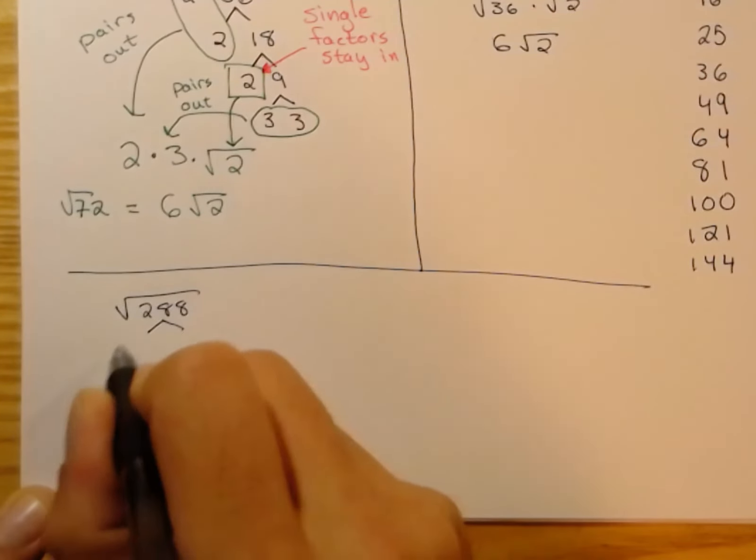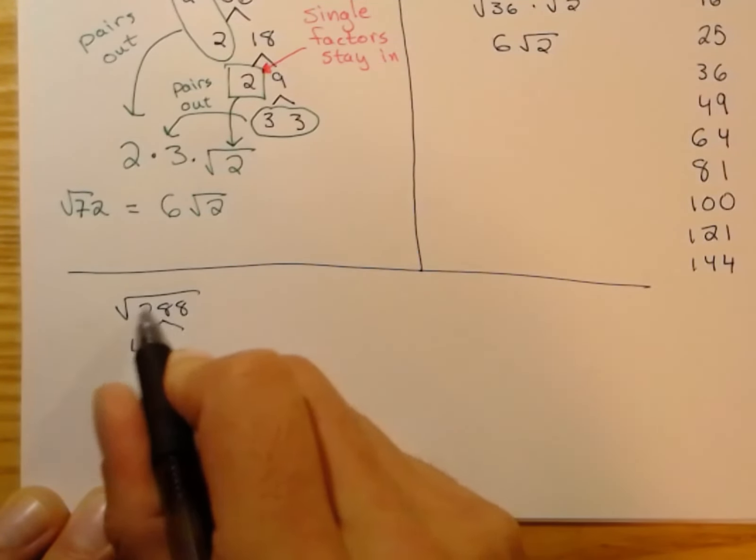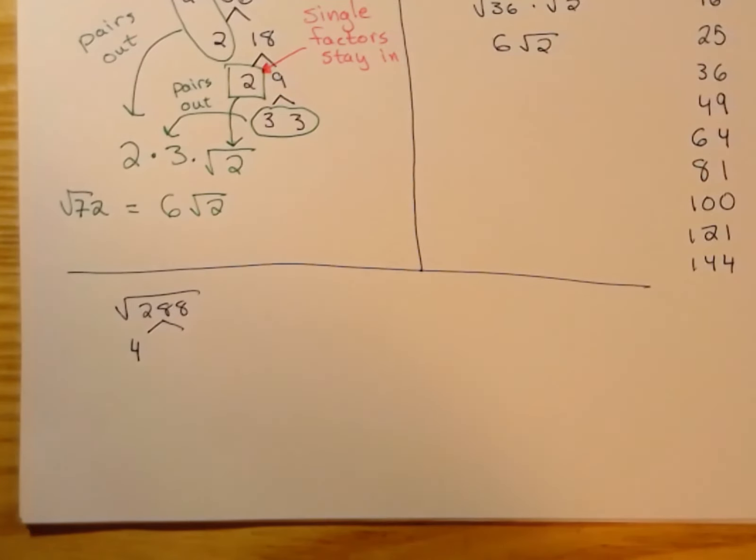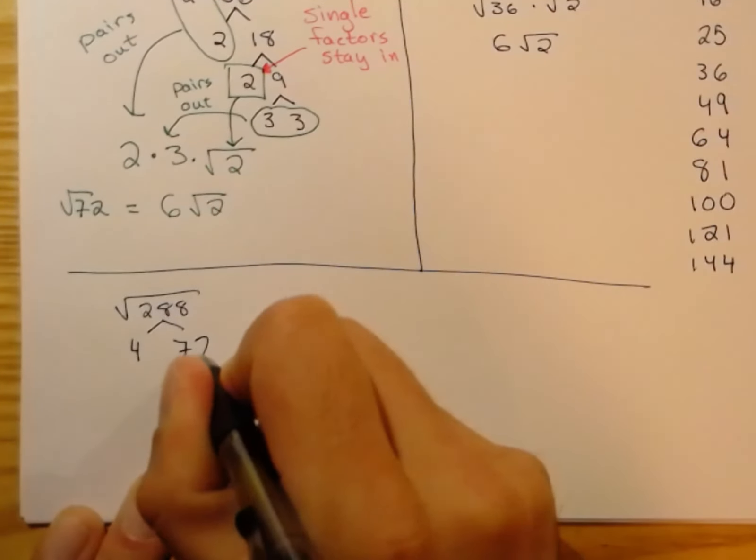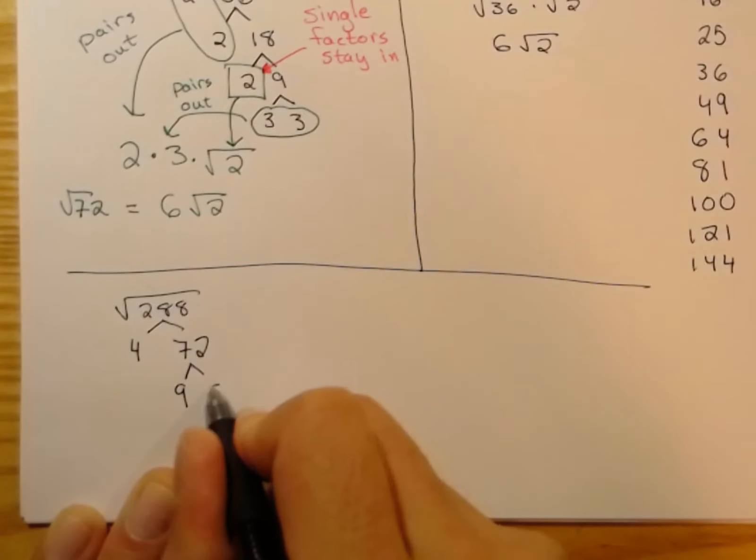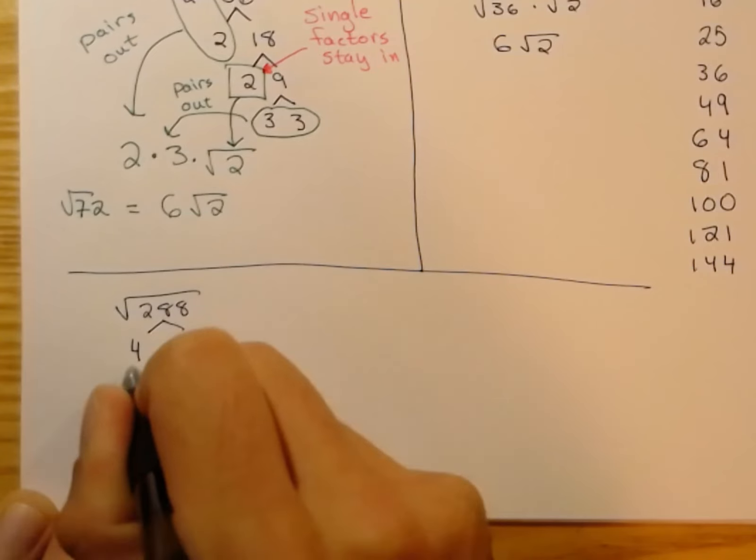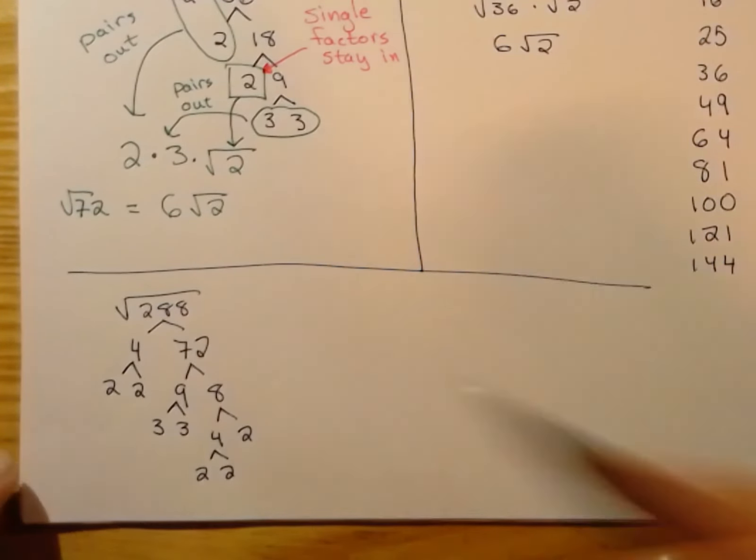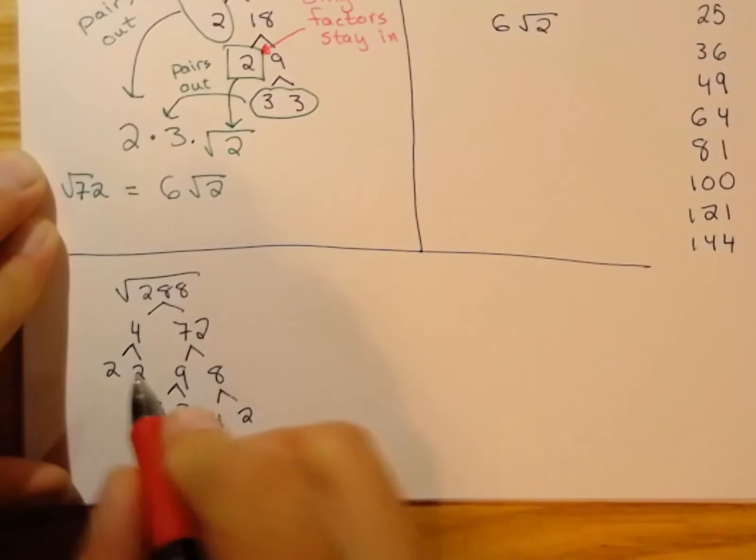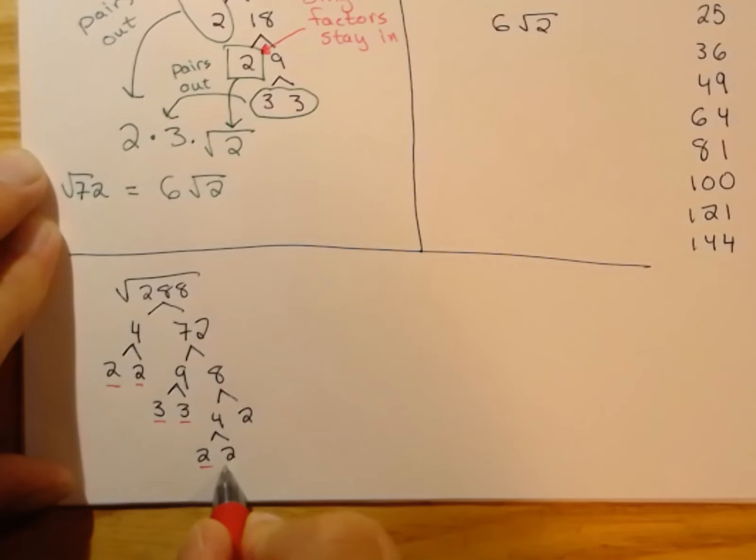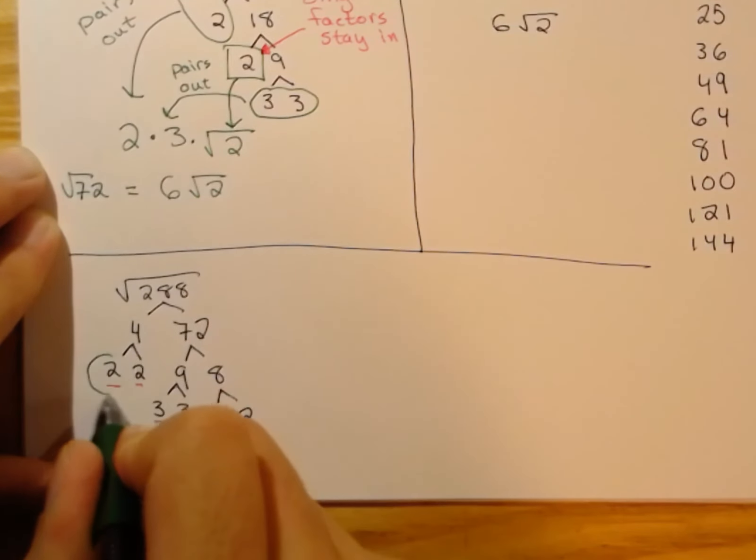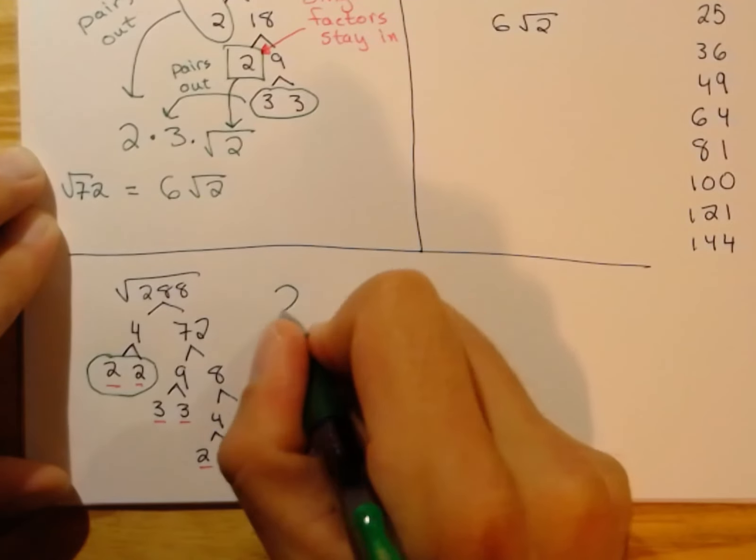First I'll do the factor tree method. 288 factors into 4, and I believe that would be 72. 72 is 9 times 8. 8 is 4 times 2. 4 is 2 times 2. 9 is 3 times 3. 4 is 2 times 2. So we break up into prime number factors, all of them. And then pairs come outside the radical once.